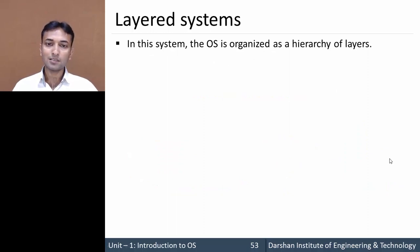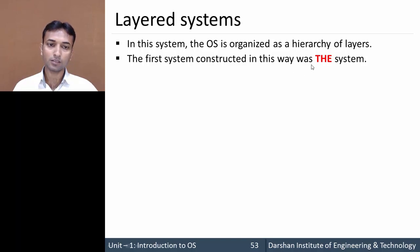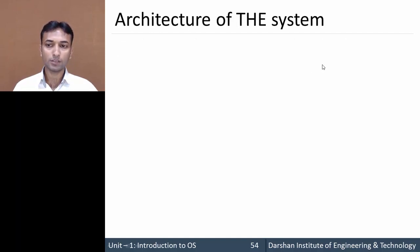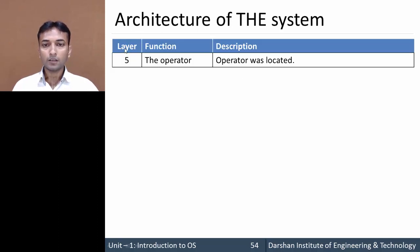The second structure is the layered system. In this system, the entire operating system is organized as a hierarchy of layers. The first system constructed in this way is the THE system. Let us now see the architecture or structure of the THE system.